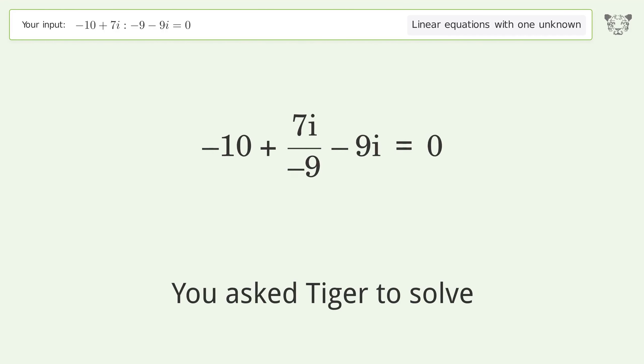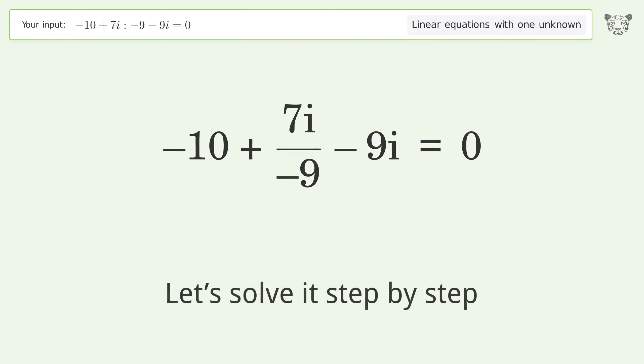You asked Tiger to solve this. This deals with linear equations with one unknown. The final result is i equals negative 45 over 44. Let's solve it step by step.